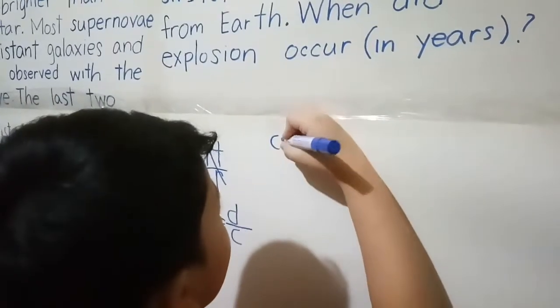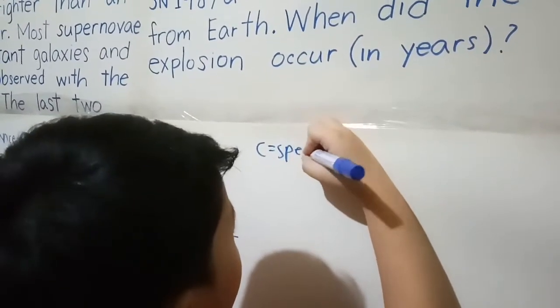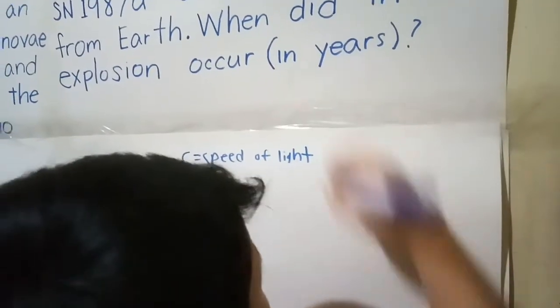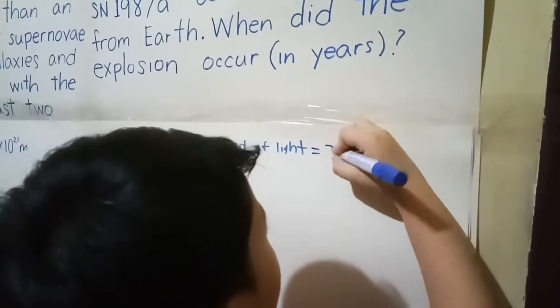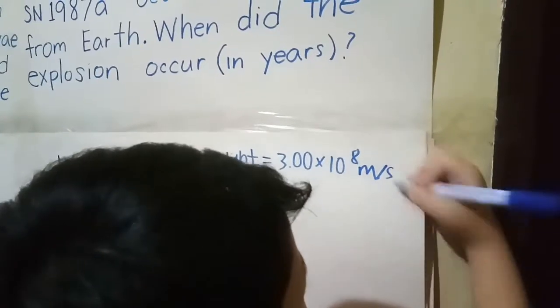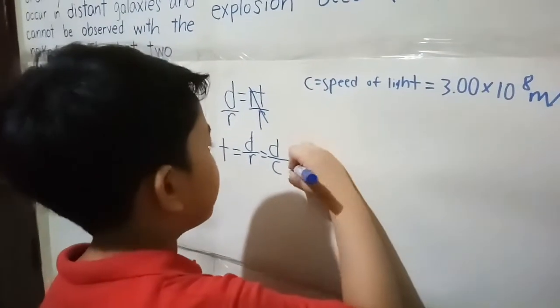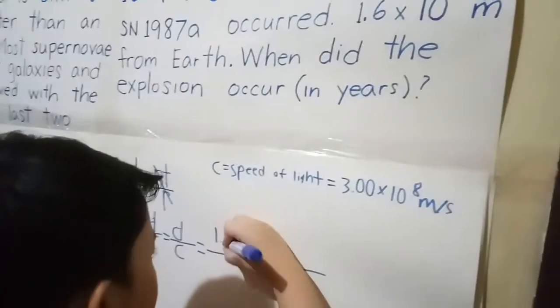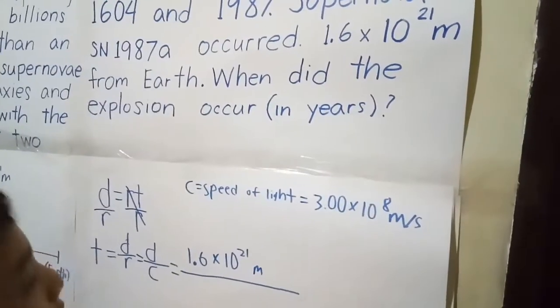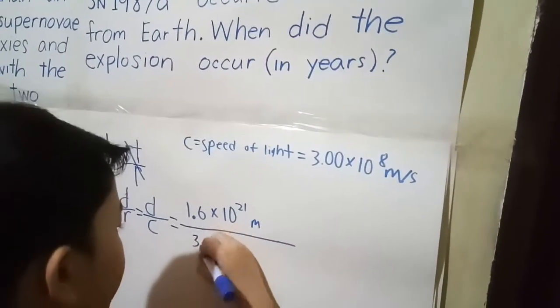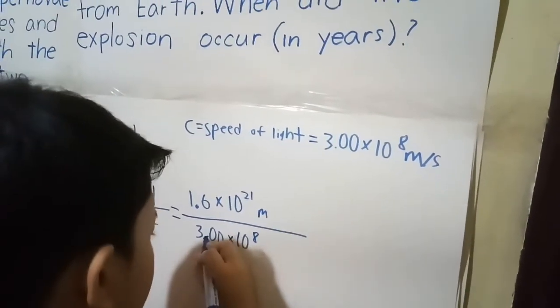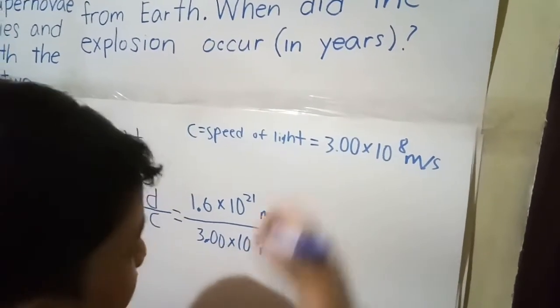The value of C, the speed of light, which is also used in Albert Einstein's famous equation E equals mc squared, is 3.00 times 10 to the 8th meters per second. Now let's substitute. The distance is 1.6 times 10 to the 21 meters, and the speed of light is 3.00 times 10 to the 8th meters per second. Meters cancel.